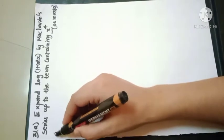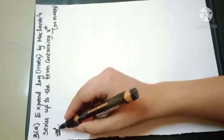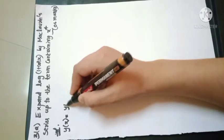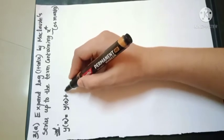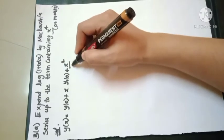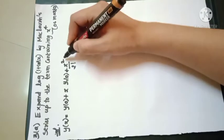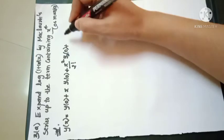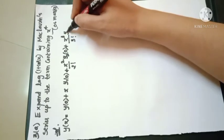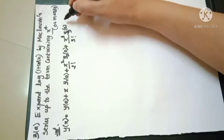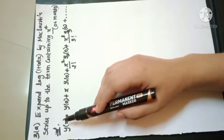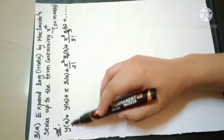Maclaurin's expansion is: y(x) = y(0) + x·y1(0) + (x²/2!)·y2(0) + (x³/3!)·y3(0) + ... This is the Maclaurin's expansion of y(x).